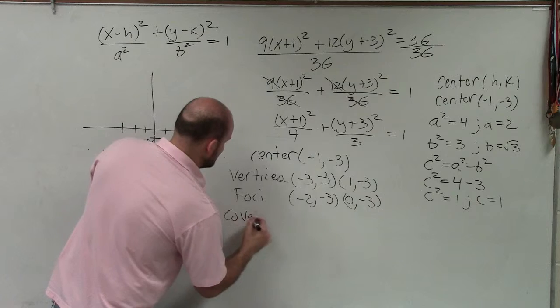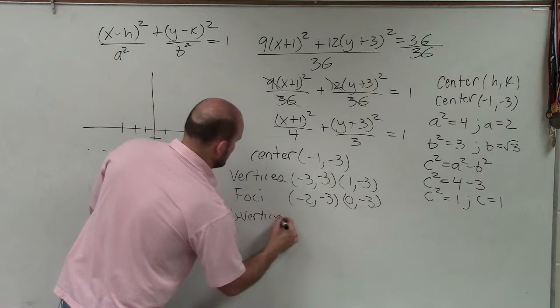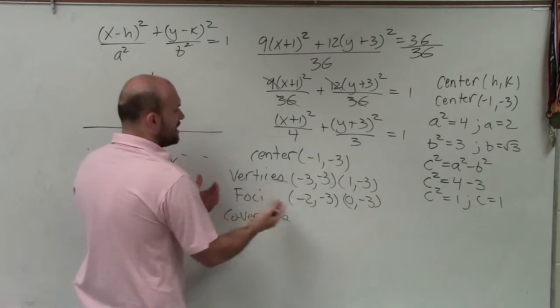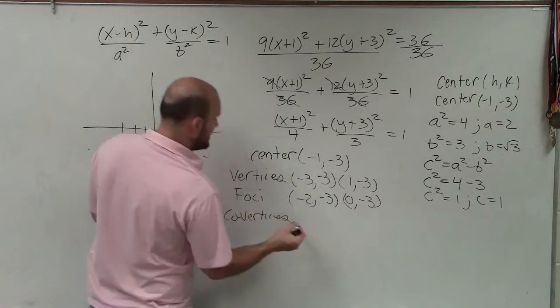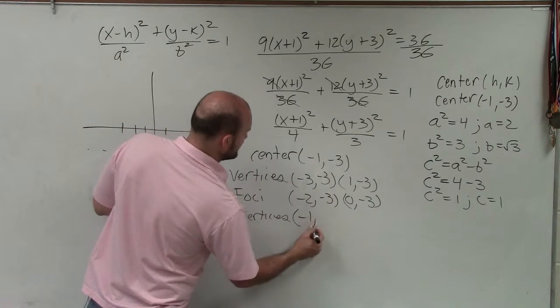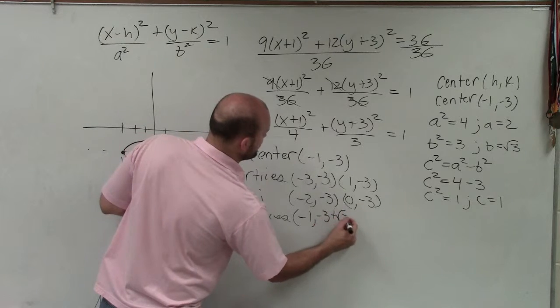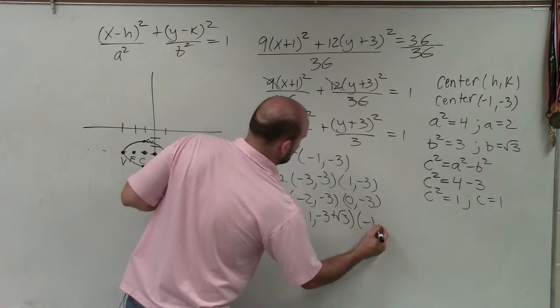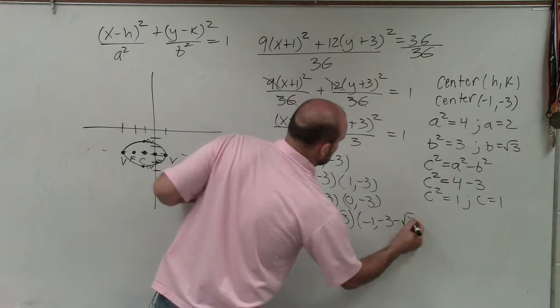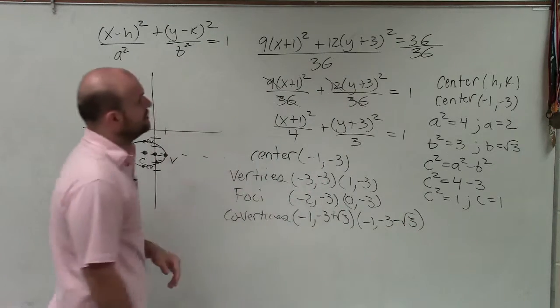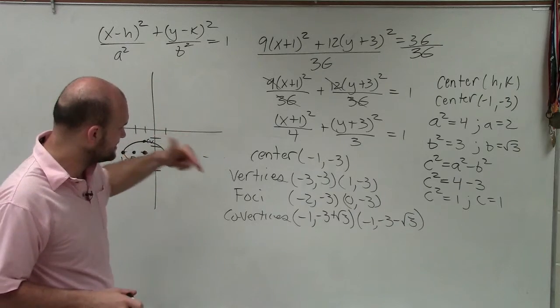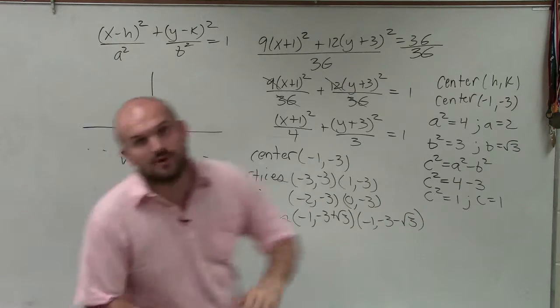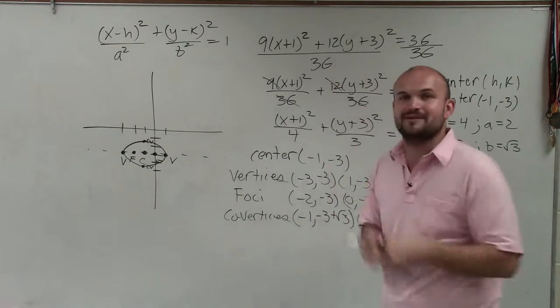However, the co-vertices, now we're not adding left or right. We're going to be adding up or down. So I'm going to take the square root of 3 and add and subtract it from -3. So that would be (-1, -3+√3) and (-1, -3-√3). So there you go, ladies and gentlemen. That is how you identify the center, the vertices, the foci, and the co-vertices, as well as graph your ellipse. Thanks.